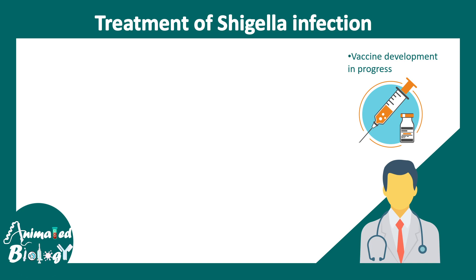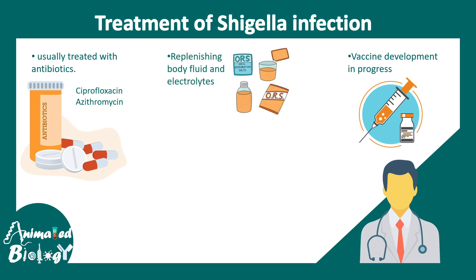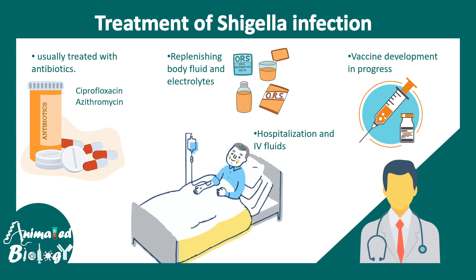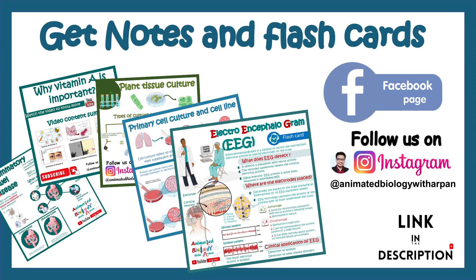A vaccine for Shigella is currently in progress, but right now shigellosis is treated with antibiotics. Ciprofloxacin and azithromycin are the antibiotics of choice. In addition, replenishing body fluids is absolutely necessary, and in cases of severe dehydration, hospitalization and IV fluid injection may be required.